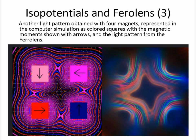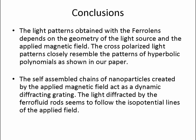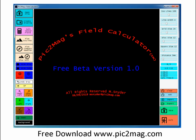Our conclusions are: the light patterns obtained with the ferrolens depend on the geometry of the light source and the applied field. The cross-polarized light patterns closely resemble the patterns of hyperbolic polynomials. The self-assembled chains of nanoparticles created by the applied field act as a dynamic diffraction grating when the field is applied and disappear when the field is removed. The light diffracted by the ferrofluid rods appears to follow the isopotential lines of the applied field. We'll now open the floor for questions. Thank you.